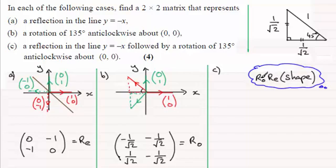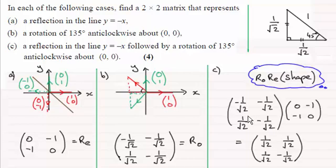And the answer then is just going to be Ro multiplied with Re. And if you do that this is what you should get. Ro times Re you should get this is your transformation matrix.